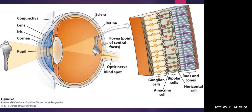That's why we have a blind spot — we literally do not have light information being detected there. However, we're not really aware of it because the brain takes care of it. We don't see a black dot on the edge of our vision — it's filled in by the brain in a very covert way. If we were looking solely at the eye's output, there would basically be a black spot of nothing where the optic nerve passes through.